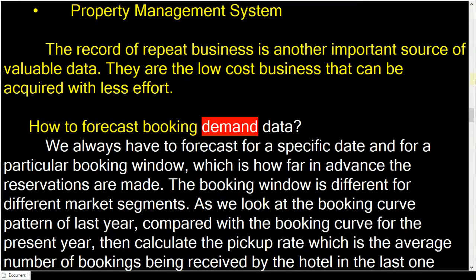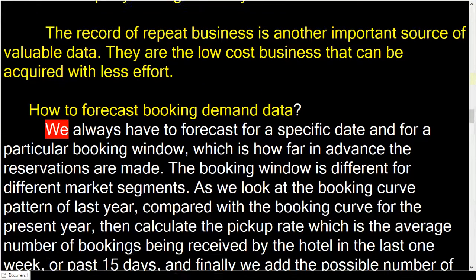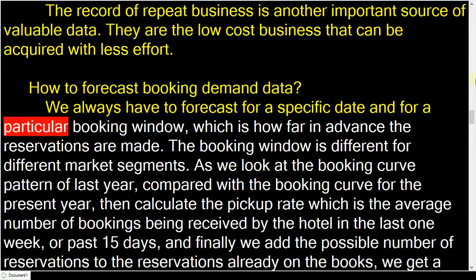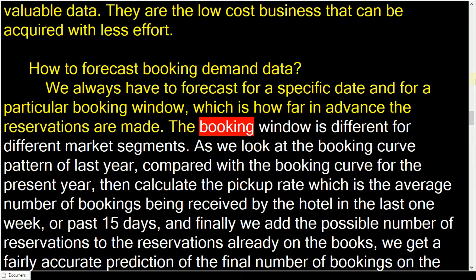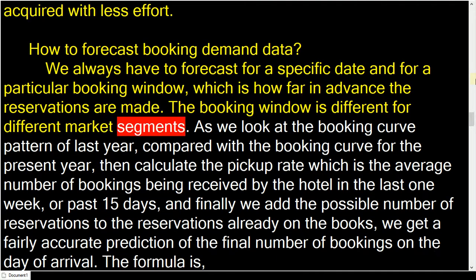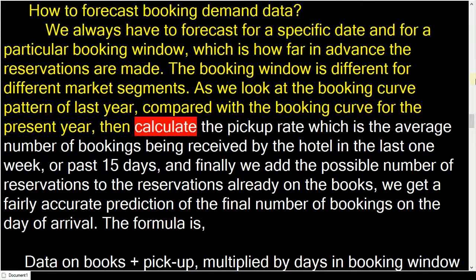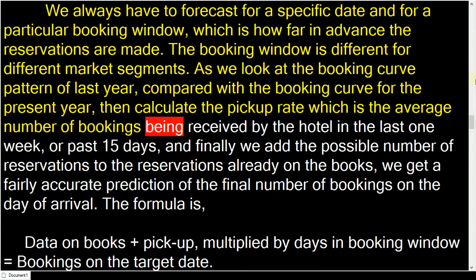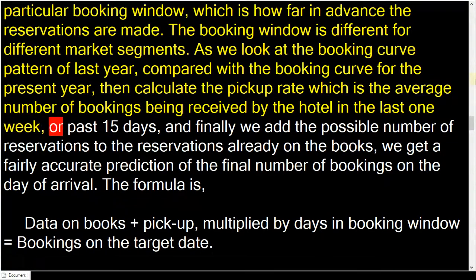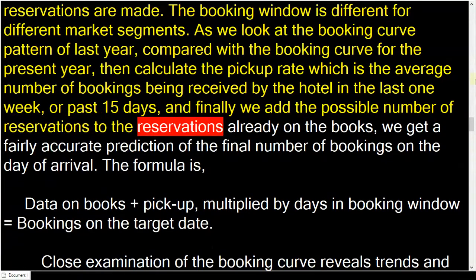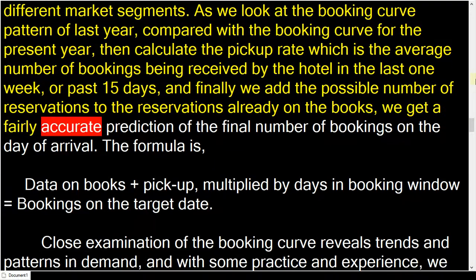To forecast booking demand data, we always have to forecast for a specific date and for a particular booking window, which is how far in advance reservations are made. The booking window is different for different market segments. As we look at the booking curve pattern of last year compared with the booking curve for the present year, then calculate the pickup rate — the average number of bookings received by the hotel in the last one week or past 15 days — and finally add the possible number of reservations to those already on the books, we get a fairly accurate prediction of the final number of bookings on the day of arrival.